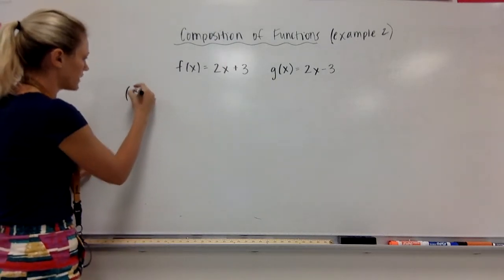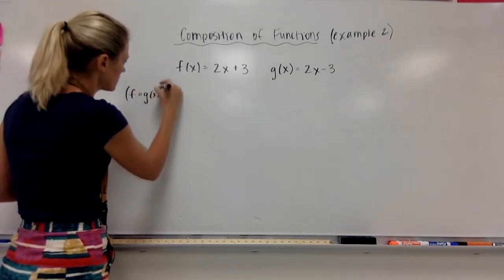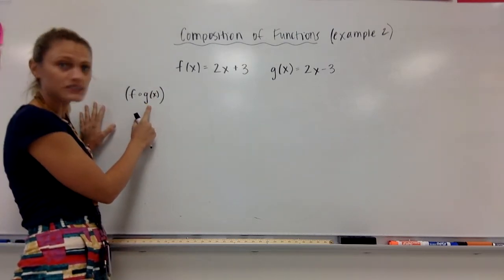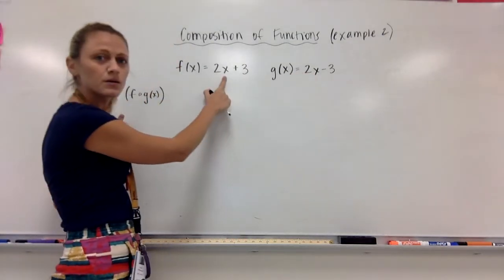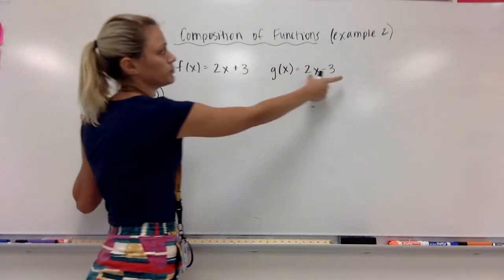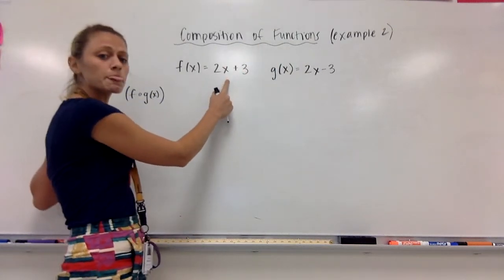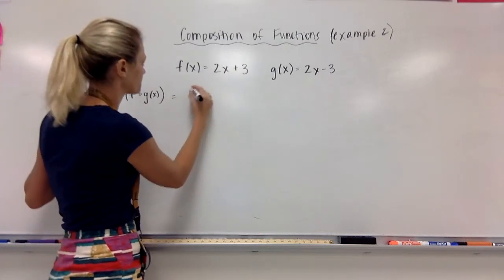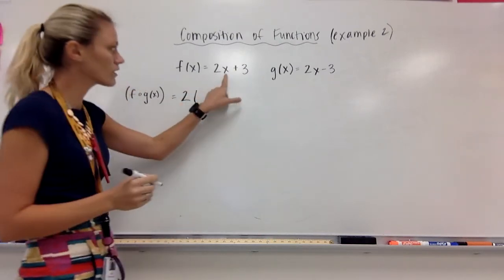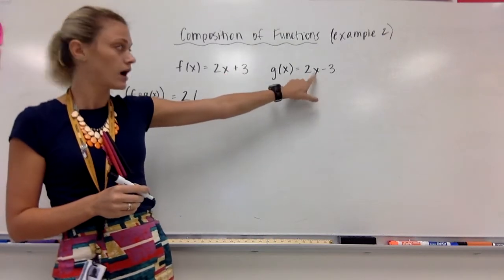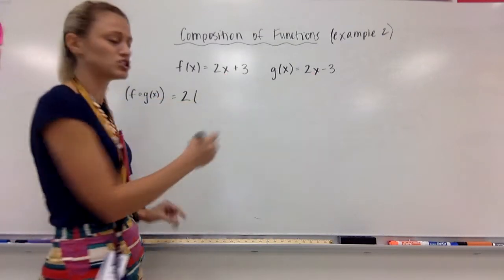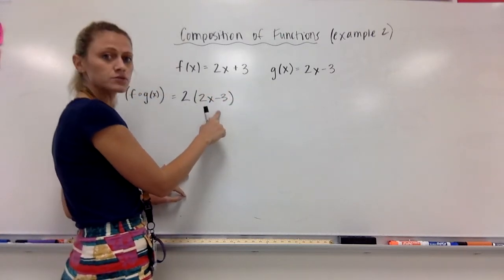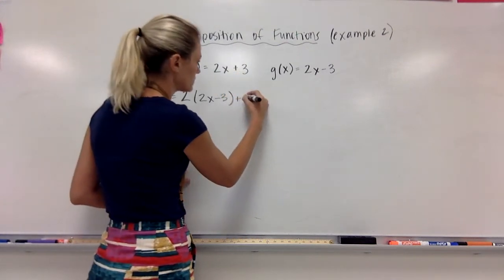We will start with f of g of x. Remember, this is just a fancy way of saying I'm going to take my g(x) function, 2x minus 3, and put it in my f(x) function. So f of g of x: f of x is 2 times x, so instead of x I'm going to input my 2x minus 3. So 2 times 2x minus 3 plus 3.